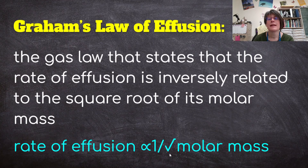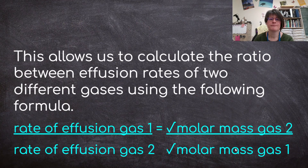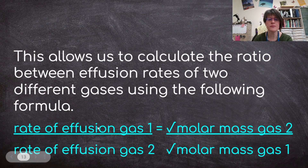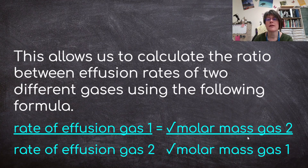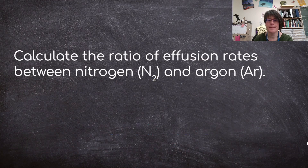This means gases that have more mass move slower. This allows us to calculate the ratio between effusion rates of two different gases. The rate of effusion of gas 1 over the rate of effusion of gas 2 equals the square root of the molar mass of gas 2 over the square root of the molar mass of gas 1. Notice these are flipped because of that inverse proportionality — where we have 1 over 2 on the left, it's 2 over 1 on the right.